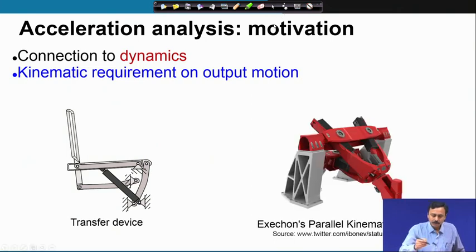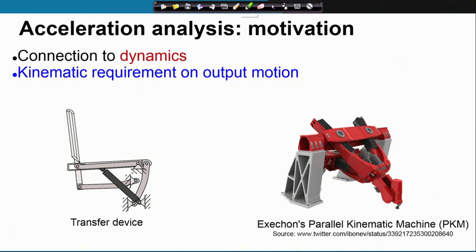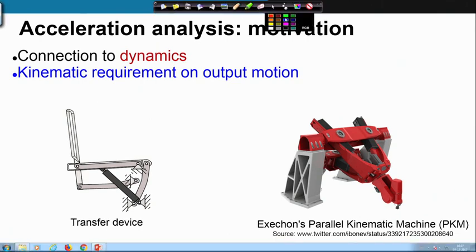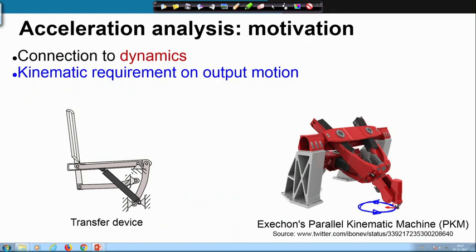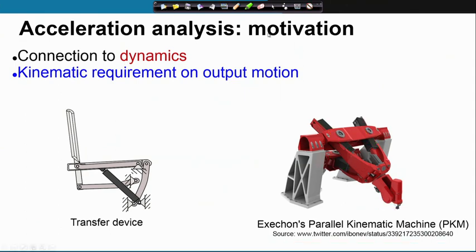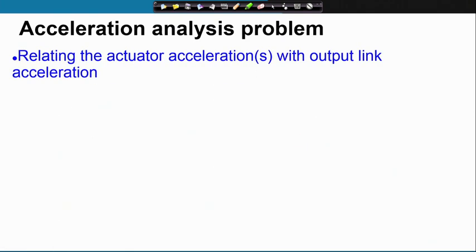The same holds for this parallel kinematic machine. Suppose I want to move the tool on a certain circular path at a constant speed. Even though the tool tip is moving at a constant speed on a circular path, it has centripetal acceleration. Therefore, I must have certain acceleration at the actuator expansion as well. What we need is to understand the acceleration input-output relation.